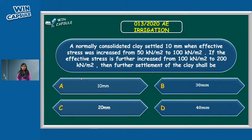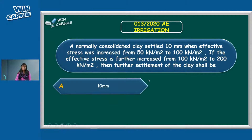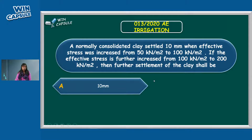Let's check the settlement equations. For settlement of clay, equations are available involving void ratio terms, thickness terms, and coefficient of volume change mv. The consolidation settlement equation is: S = (Cc / (1 + e₀)) × H × log₁₀(σ₂/σ₁). For every change in thickness, void ratio change, and Cc value, these remain the same — they are constant.